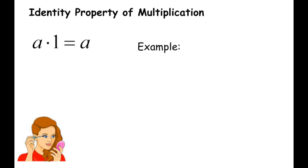Identity property of multiplication works the same way but with multiplication. What can you multiply a number by to change what it looks like without changing its value? If I have 3 times 1, I still get a value of 3. Multiplying by 1 didn't change the answer or its value — it just changed the way it looked.